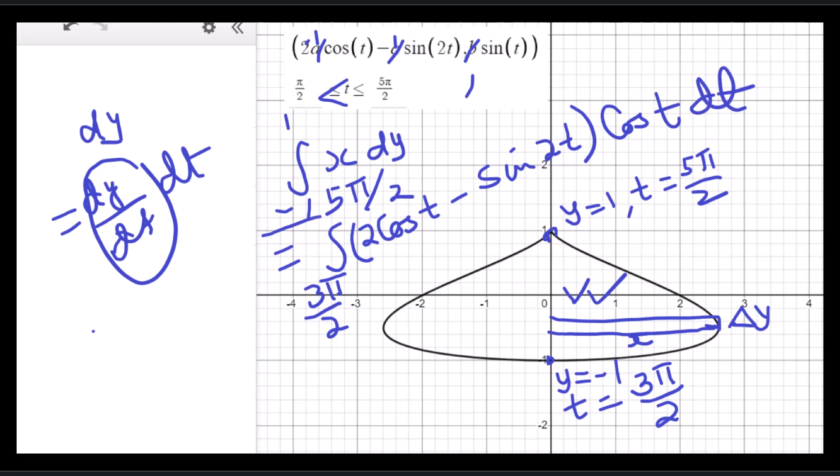Sine 2t can be changed to 2 sine t cosine t, and you may have to use the double angle formula if you're doing this without a calculator. But in this kind of case, I don't ask you not to use a calculator, so let's use our calculator and get the value.